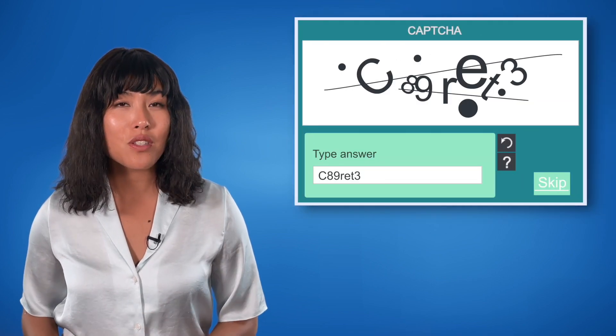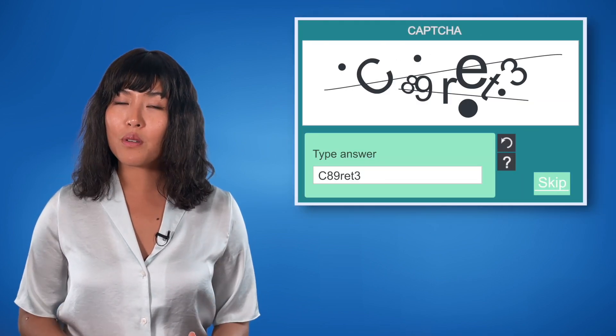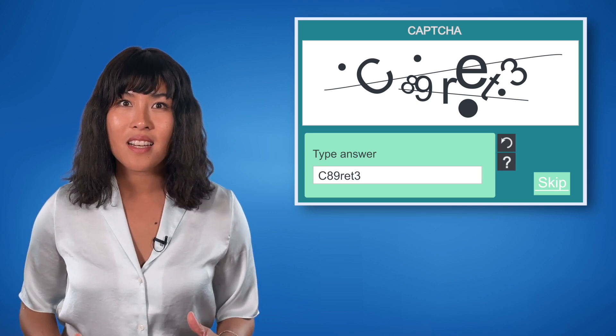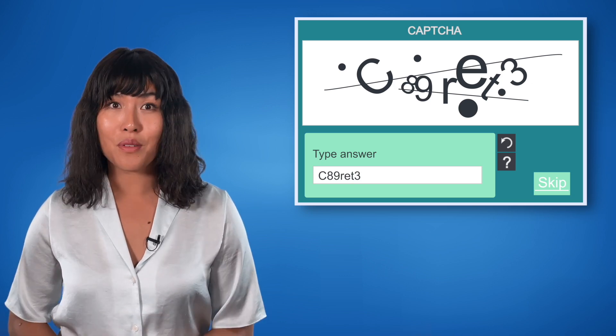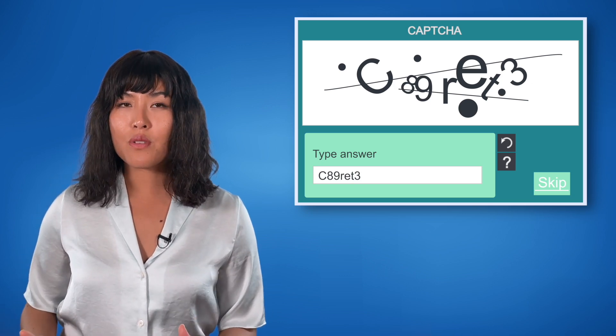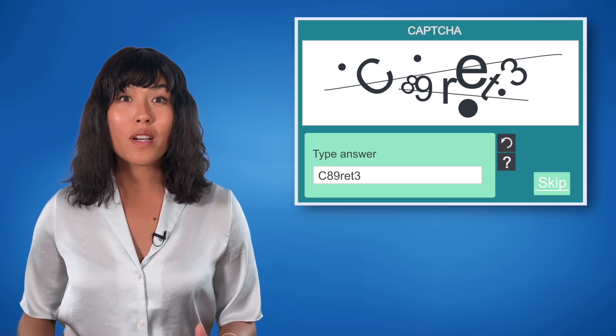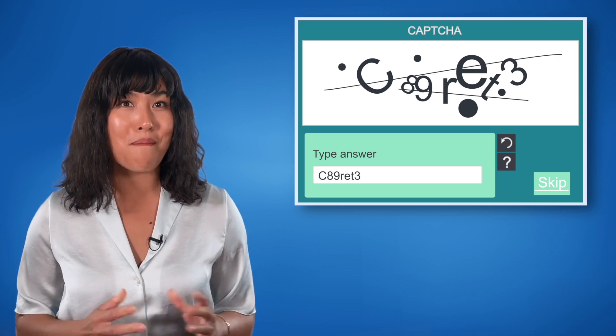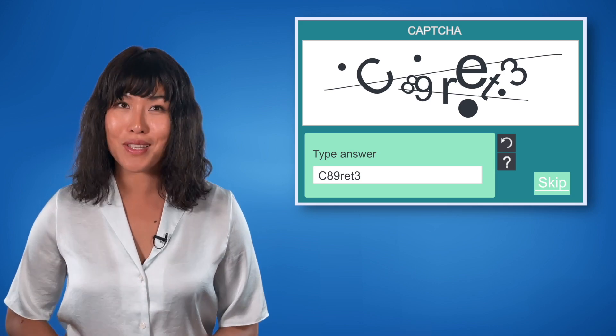CAPTCHA challenges users to complete tasks that are easy for humans, but difficult for bots, such as identifying distorted text, selecting images that match a certain criterion, or solving simple puzzles. By requiring users to pass CAPTCHA tests during the login process, organizations can prevent automated password cracking attempts by bots and enhance the overall security of their authentication systems.